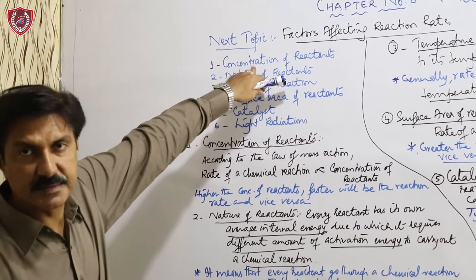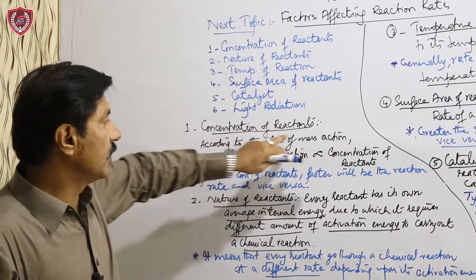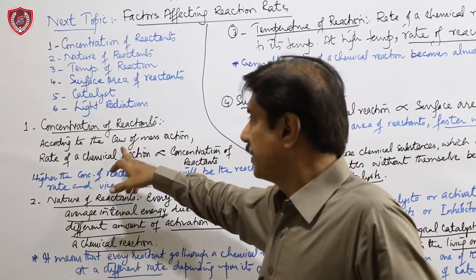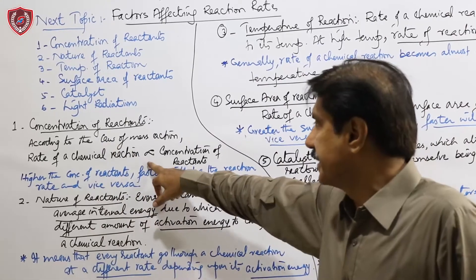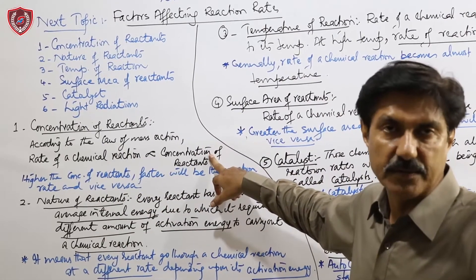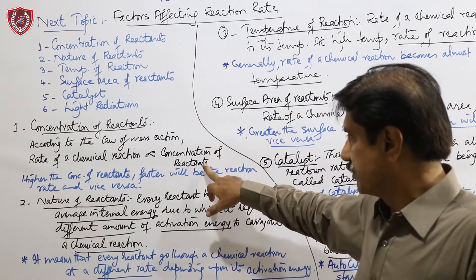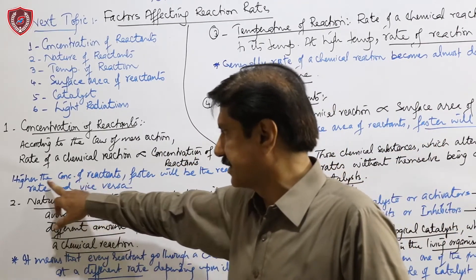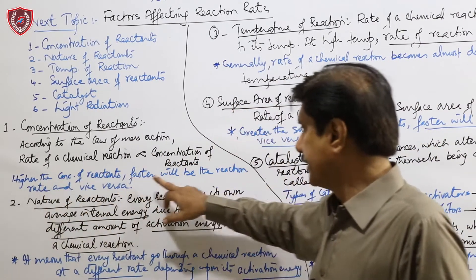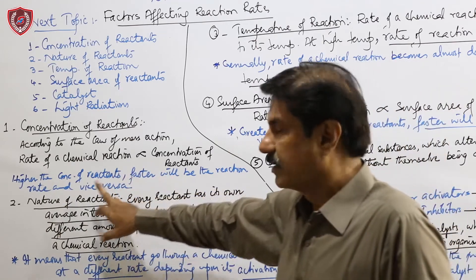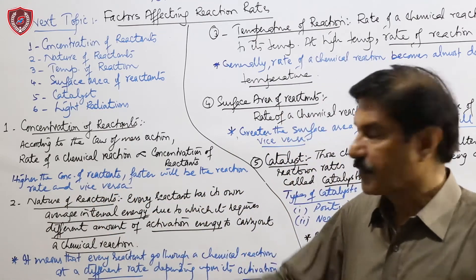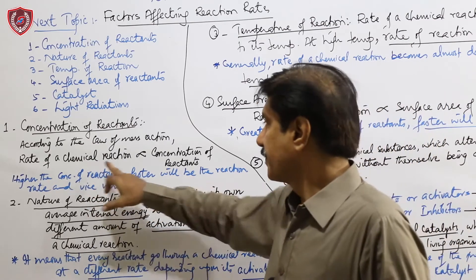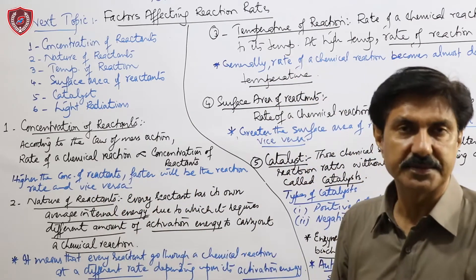The next topic is 'Factors Affecting Reaction Rates' — what are the factors that can make a slow reaction fast or slow down a fast reaction, overall affecting the rate of reaction. We have 6 factors. The first factor is concentration of reactants. By the law of mass action (studied in Chapter 6), rate of reaction is directly proportional to the concentration of reactants. Increasing concentration of reactants makes rate of reaction faster.